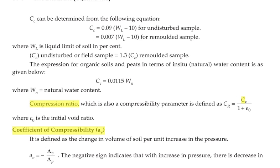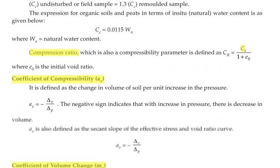Next we are going to see the compression ratio, which is also a compressibility parameter. It is defined as CR, and the formula for CR is equal to CC divided by (1 + E0).